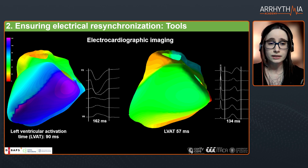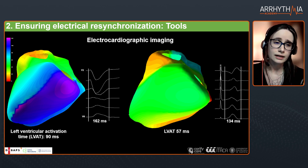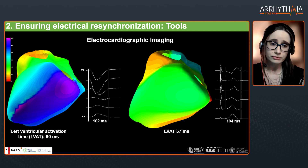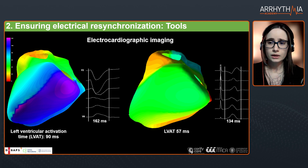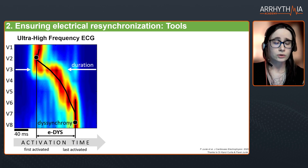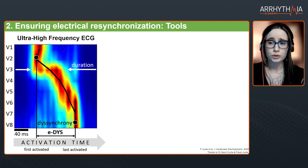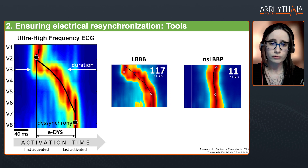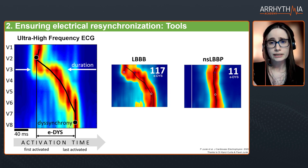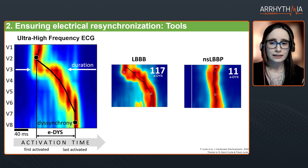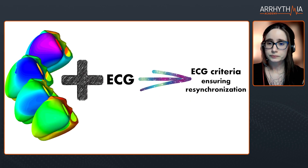ECGI is a technique that no longer requires CT to obtain these beautiful activation maps. We can see left bundle branch block with late activation of the lateral wall of the left ventricle, and when we pace the left bundle, we obtain correction of interventricular dyssynchrony with very homogeneous activation. Other labs use ultra-high frequency ECG, which is also useful to see if we are correcting dyssynchrony with left bundle branch pacing. But we want to move toward having only ECG criteria that labs worldwide can use when implanting left bundle branch pacing leads.